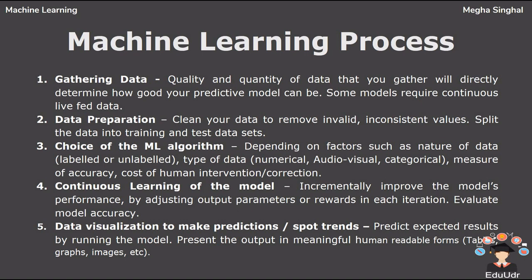Now let's understand all this in detail. The quality and quantity of data that you gather will directly determine how good your predictive model can be. The process of gathering data depends on the type of project that we desire to make. So if we want to make an ML project that uses real-time data, then we can build an IoT system using different sensors. The data can be collected from various sources such as file, database, sensor, and many other resources.